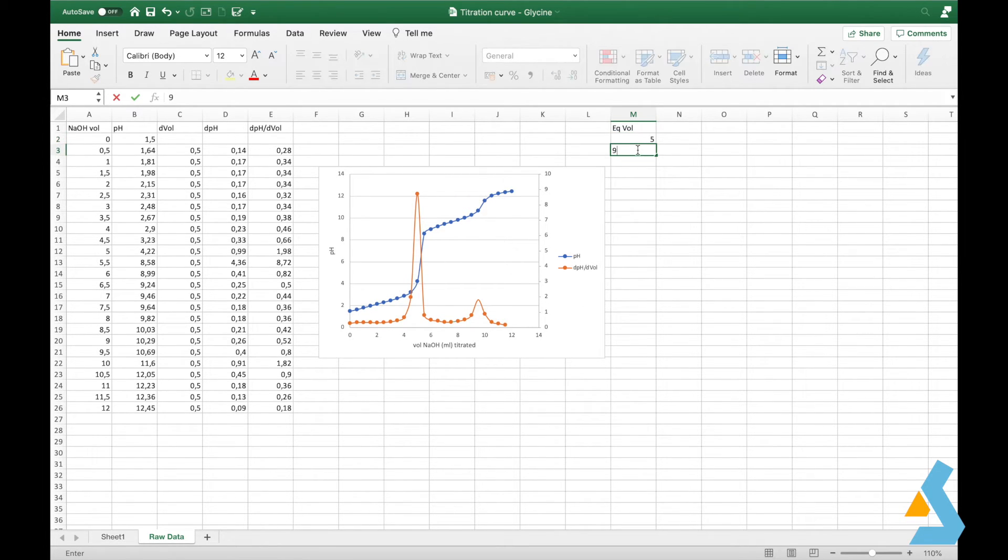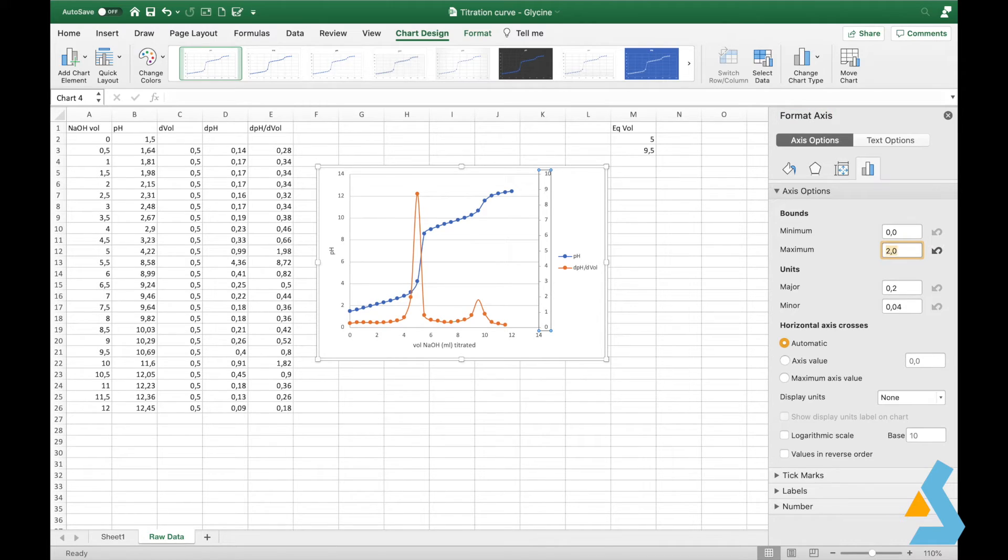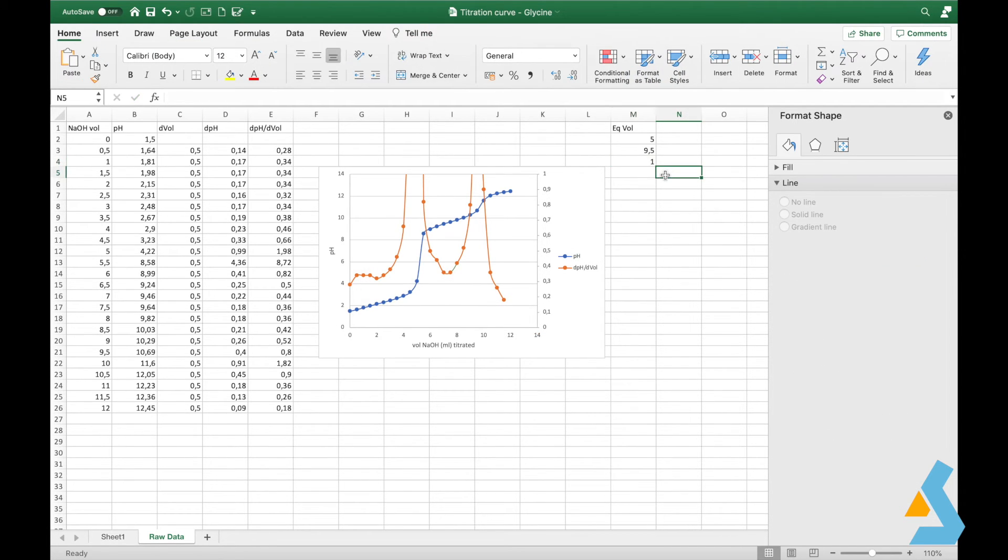To see the other one, we can zoom into the graph. To do that, we can change the range of the secondary y axis of the derivative plot. Now that we can see the third equivalence point, we then record that as well.